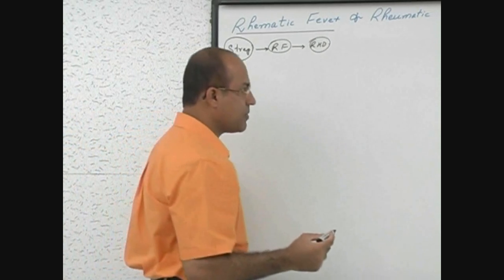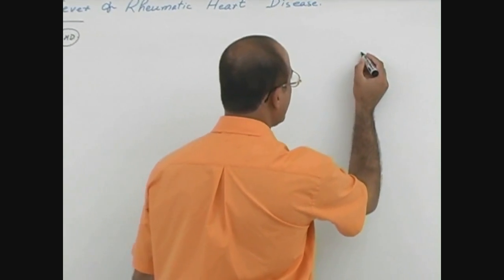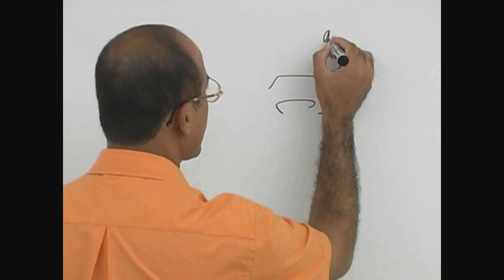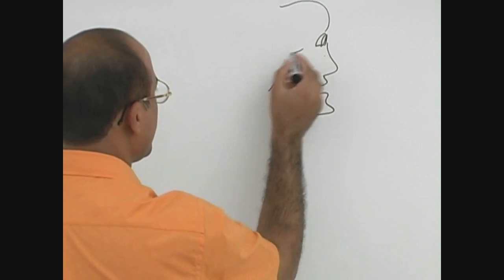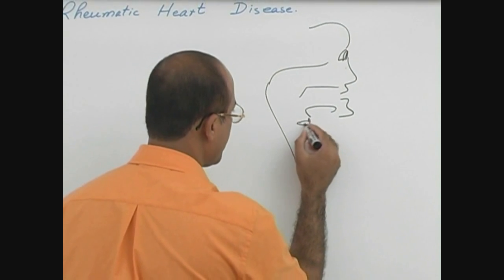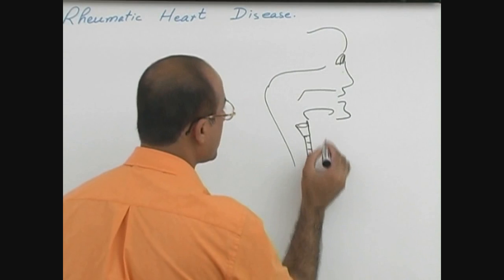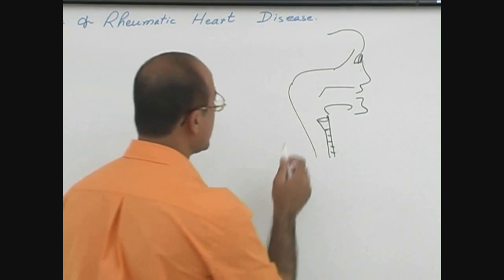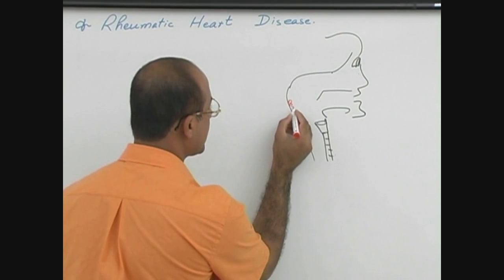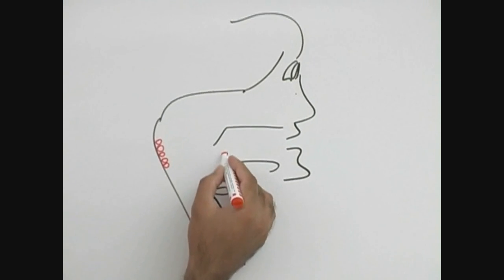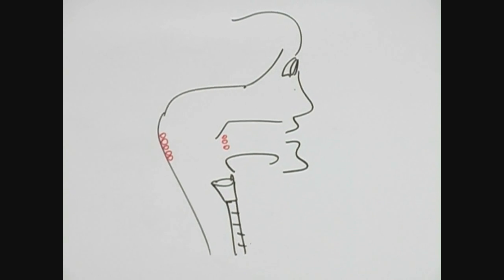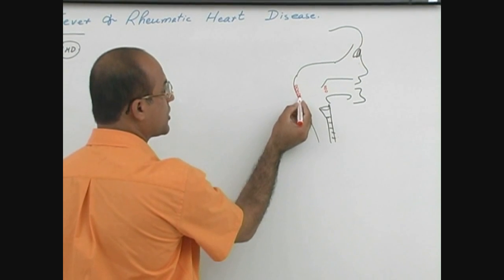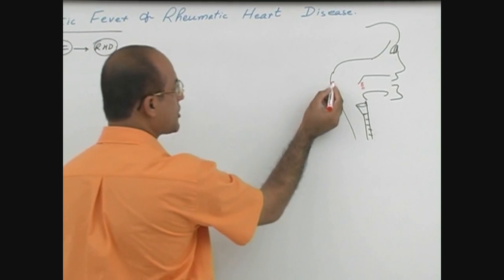Let us take a simple example of a child. In this person there is sore throat. There is a special type of bacteria which enters the pharynx, which attacks the pharyngeal mucosa or tonsils. This special type of bacteria which can induce rheumatic fever is a streptococcus — not every streptococcus, but a very special type.